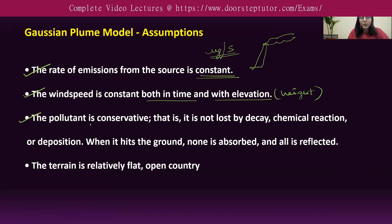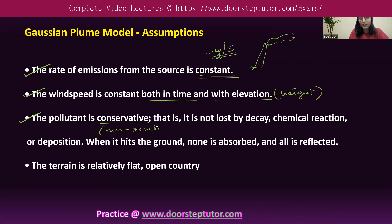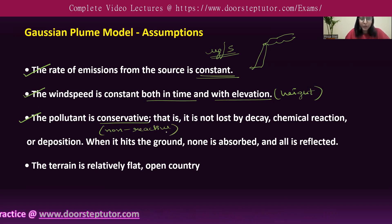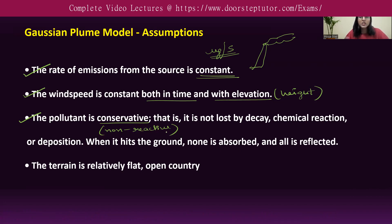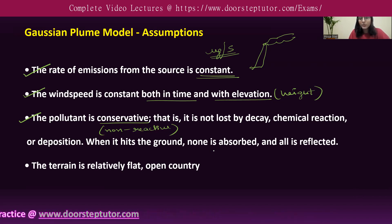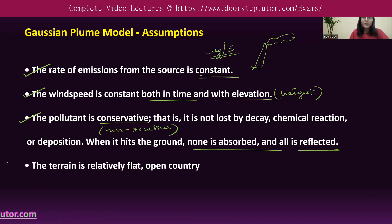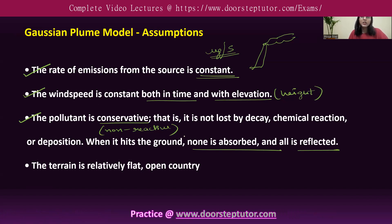The third assumption is that the pollutant is conservative, meaning non-reactive. We apply the Gaussian plume model only to non-reactive pollutants — those that are not destroyed, do not change their chemical composition, and are not lost by decay or deposition. Even when they hit the ground, none is absorbed and all is reflected. For reactive pollutants like photochemical smog and VOCs, we cannot use the Gaussian plume model.